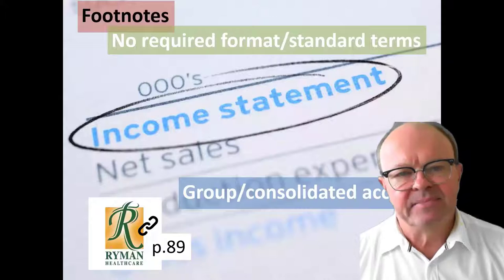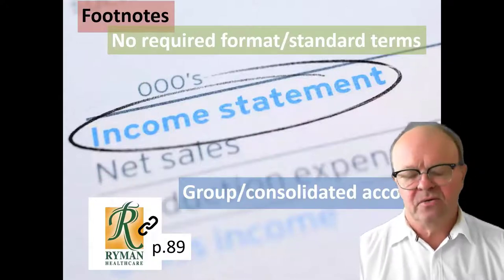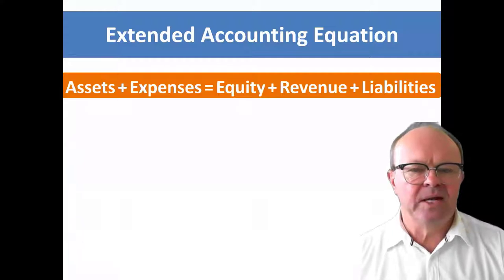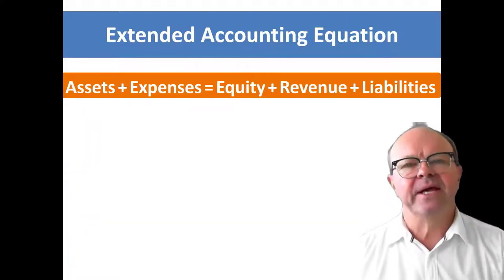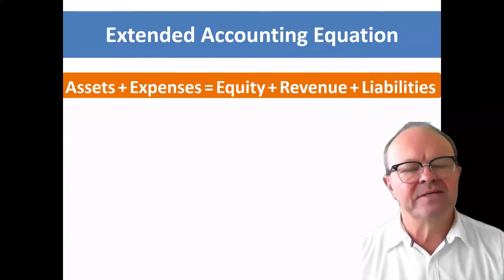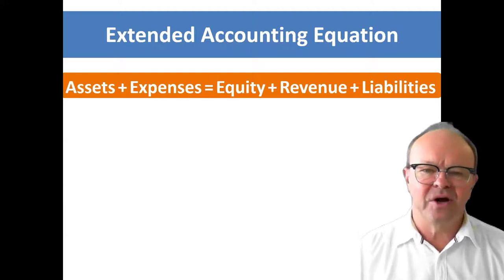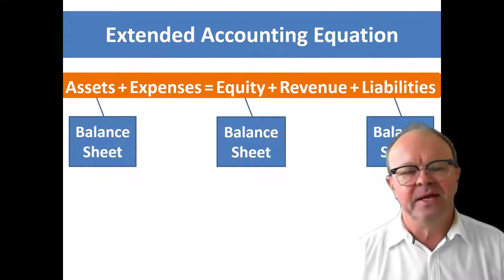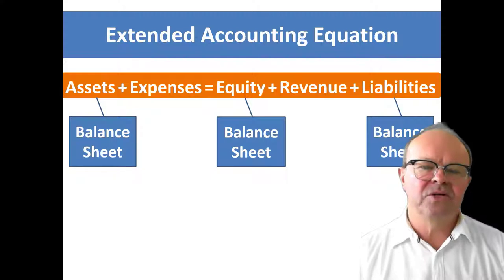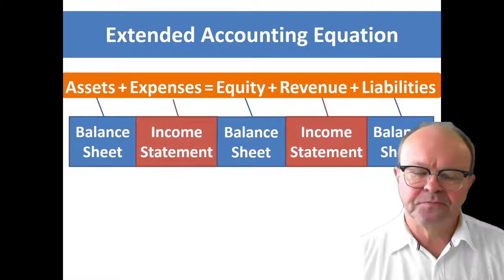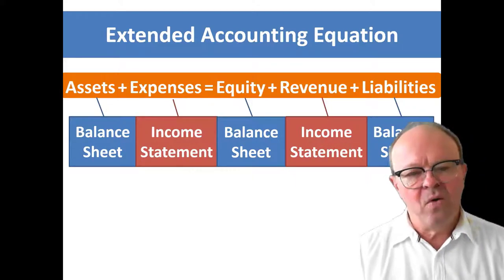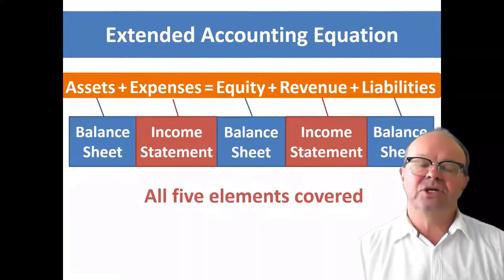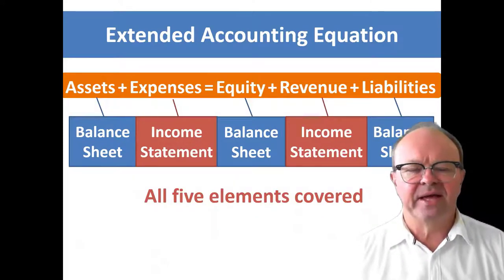The extended accounting equation is: assets plus expenses equals equity plus revenue plus liabilities. If you haven't memorized that, you need to do so now — just write it down 40 times. The balance sheet has assets, equity and liabilities, covering those elements. The income statement has the revenue and expenses. So all five elements of accounting are covered between the balance sheet and the income statement.